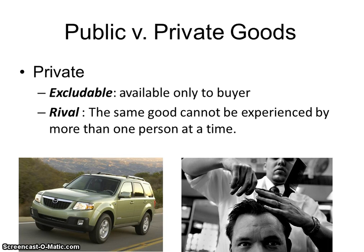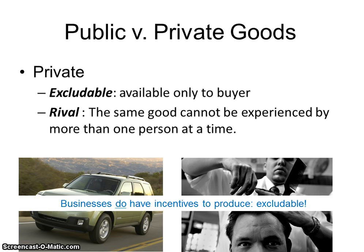A couple examples of private goods would be things like cars. If you buy a car, you're the only one that can use that car — not anybody can just get in your car and drive it, and we can't have a bunch of people driving your car at the same time. And a haircut: because you pay for the haircut, you get the haircut. Five people at once can't experience the same haircut on the same head, so that's definitely a private good. With private goods, businesses do have incentives to produce enough because they're excludable, and they can make sure that only the people who are paying for them get these goods.